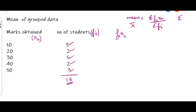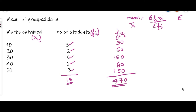For that, first we have to find out fi·xi by multiplying each score by its corresponding frequency: 10×3 = 30, 20×2 = 40, 30×5 = 150, 40×2 = 80, and 50×3 = 150. When you total the fi·xi column you get 470. So the arithmetic mean x-bar equals 470 divided by 15, which gives 31.33.